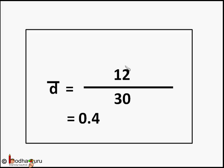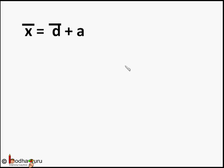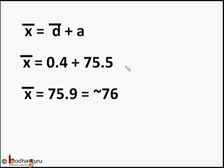So the mean heartbeat rate x̄ will be equal to d̄ plus the assumed mean, which equals 0.4 + 75.5 = 75.9. We round it to 76 as we are talking about heartbeats. So the assumed mean method reduced the values and saved us a lot of time while calculating the mean.